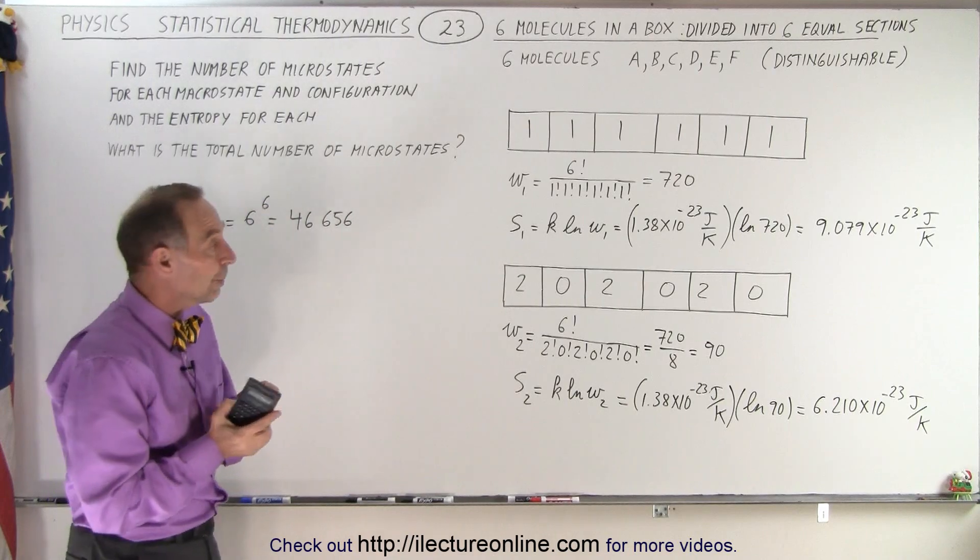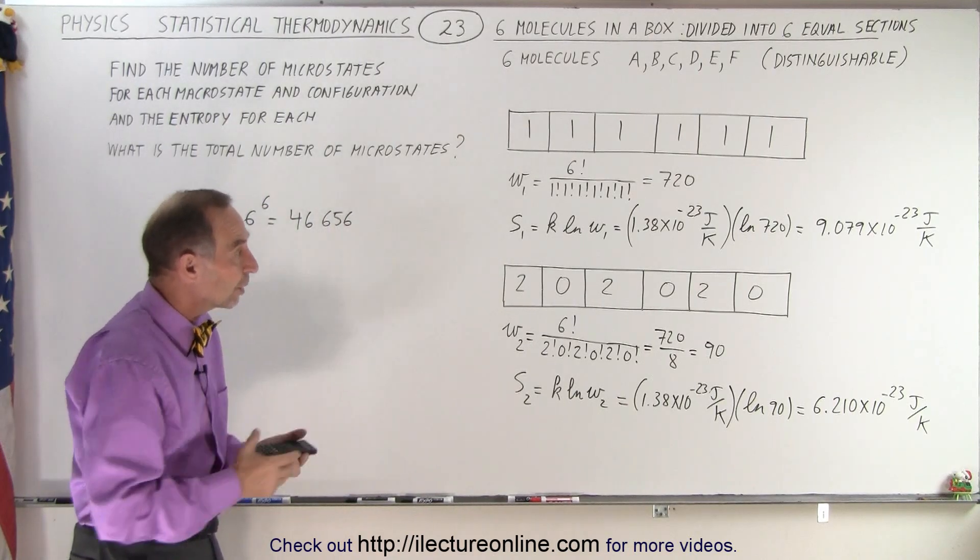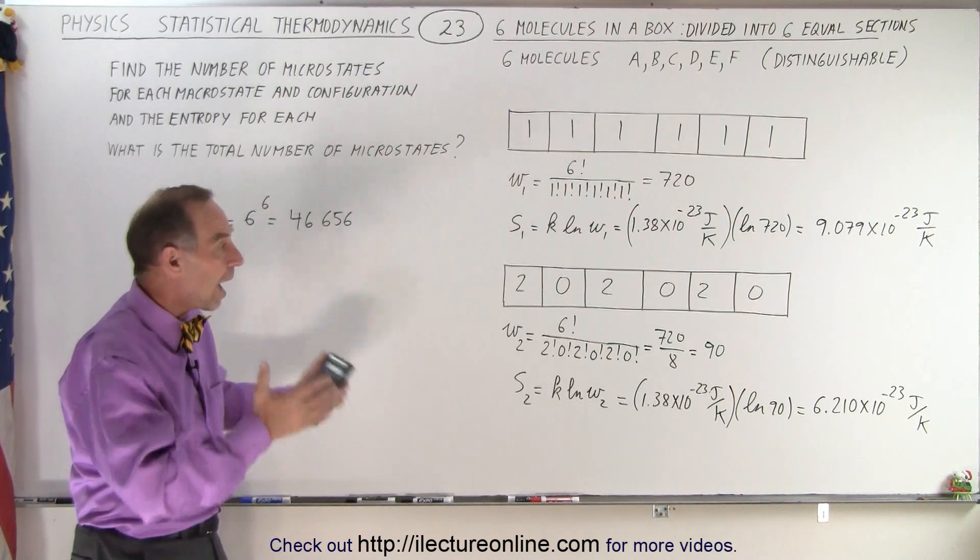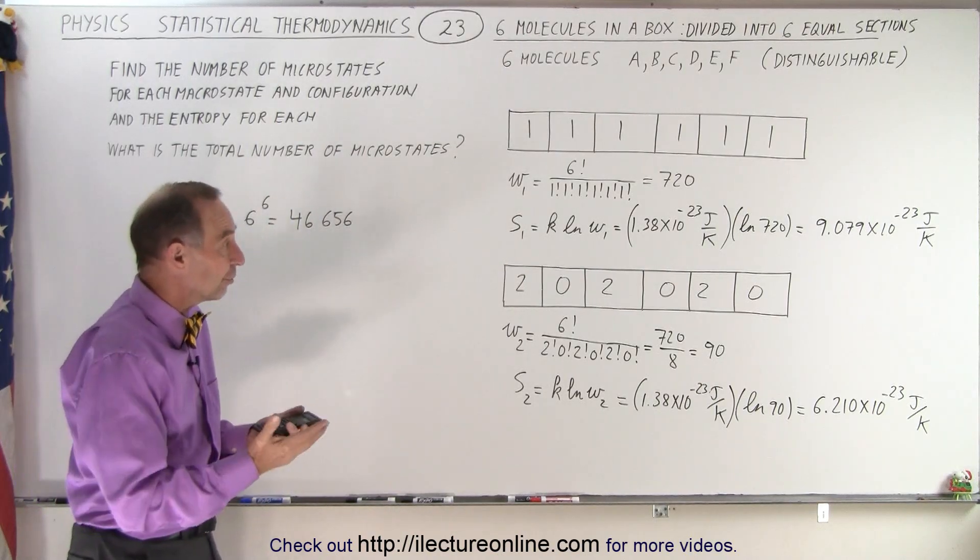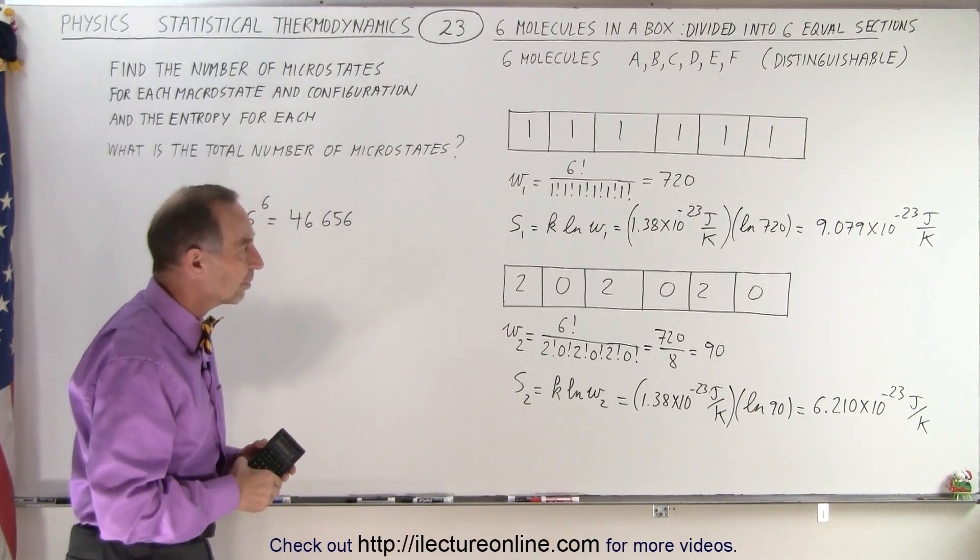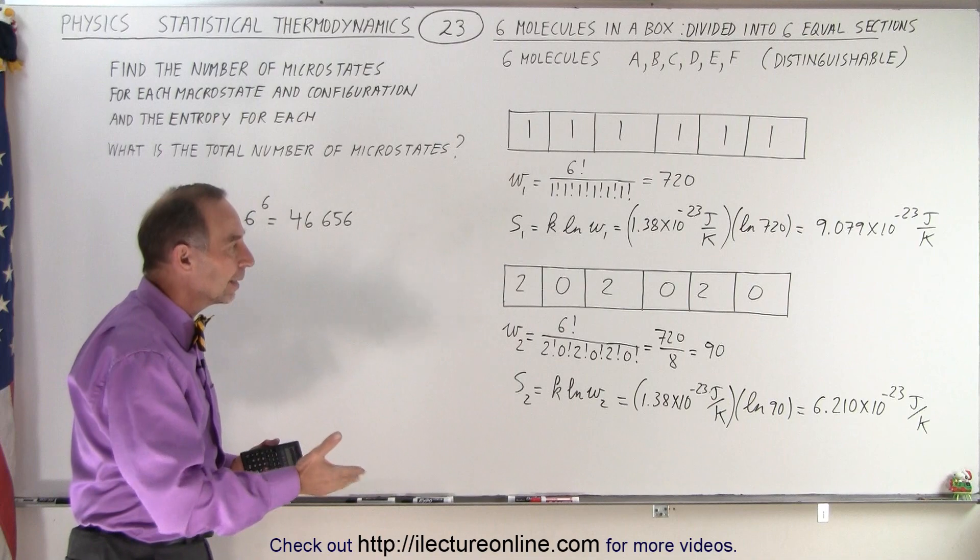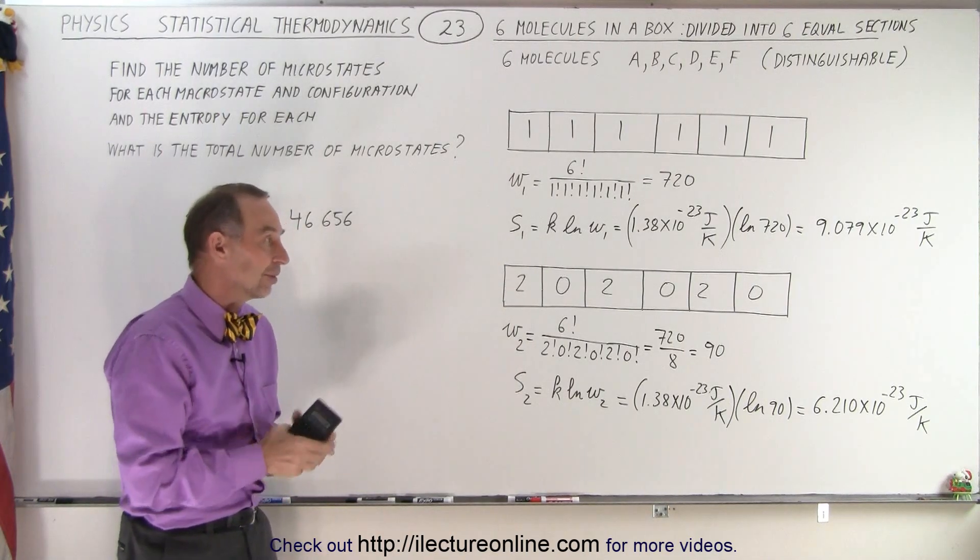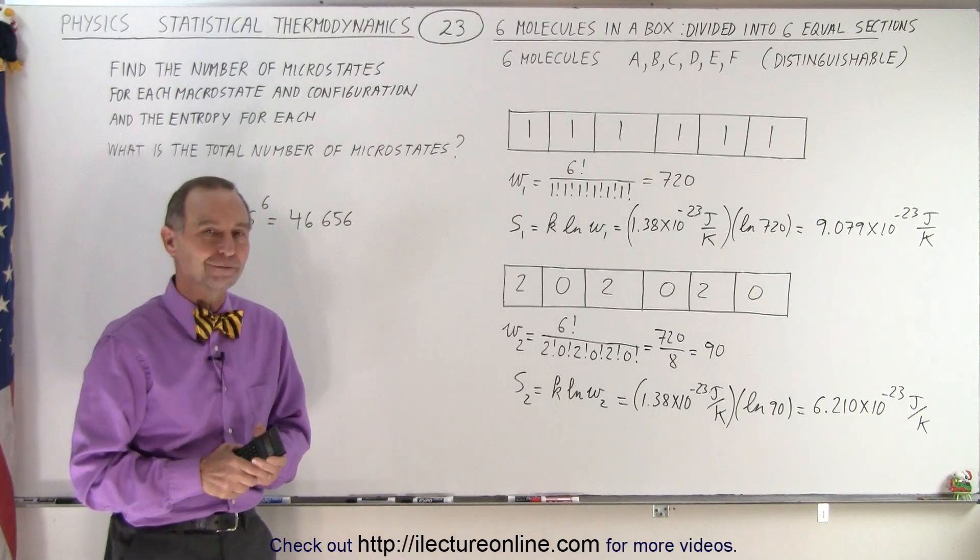So you can see that the randomness goes up depending upon which situation we want to consider. Same box, same number of molecules, but how we want to partition the box makes a big difference in the number of microstates you can have, the possibility of the number of microstates, and the associated randomness or entropy with each of those cases. And that's how they're calculated, and that is how it's done.